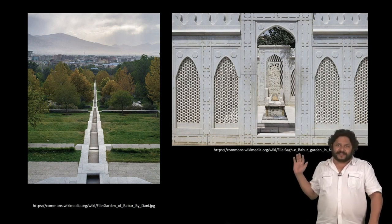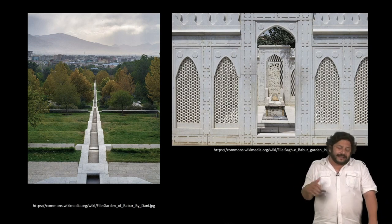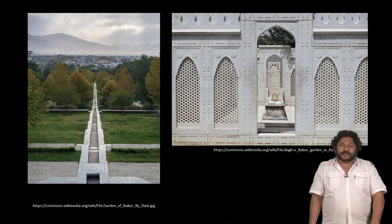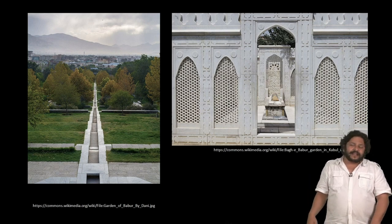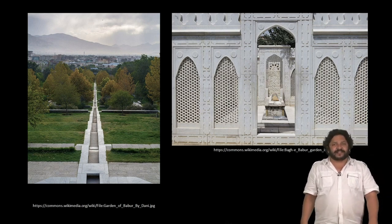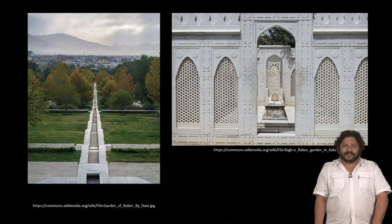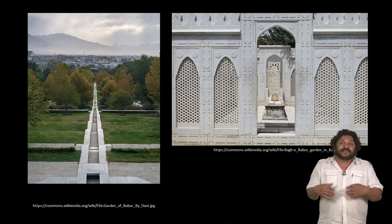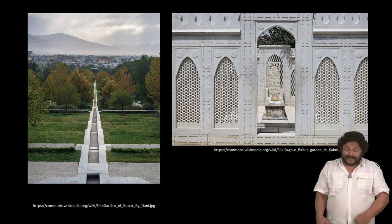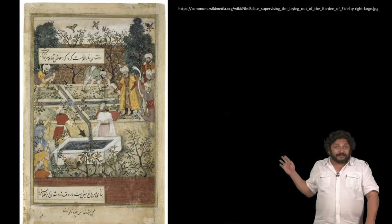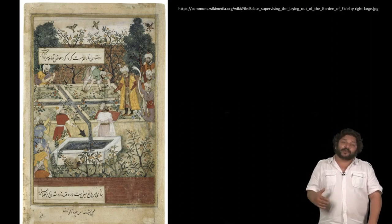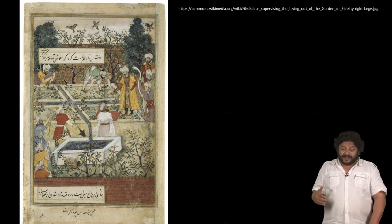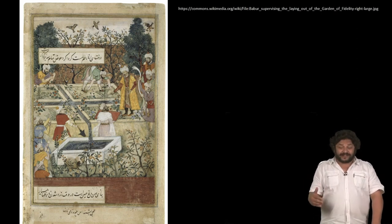The grave of Babur himself is very simple, open to the sky, in conformance with traditional orthodox beliefs about how a grave should be. The garden was very badly destroyed in the civil war that Afghanistan suffered in the 1990s and 2000s and has recently been completely restored. While not in India itself, it is an important precedent for things that will follow for Babur's descendants in India. We know from later paintings of the ways in which emperors personally supervised the laying out of gardens.